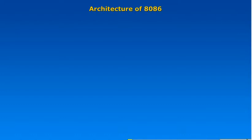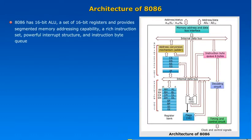Architecture of 8086. The 8086 has a 16-bit ALU, a set of 16-bit registers, and provides segmented memory addressing capability, a rich instruction set, powerful interrupt structure, and instruction byte queue. It has two separate functional units: the Bus Interface Unit and the Execution Unit.